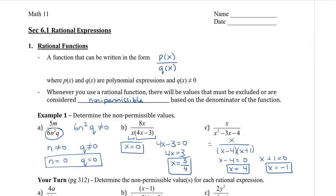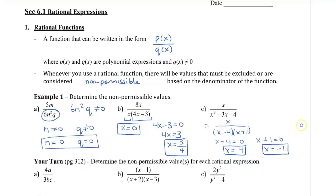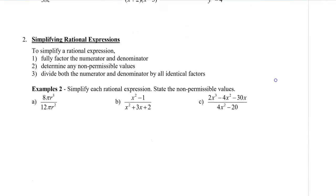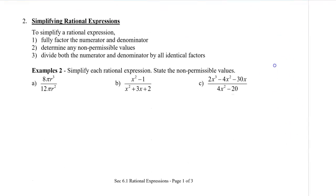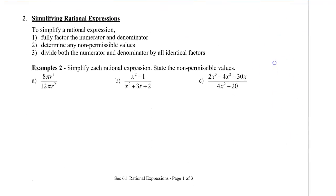Now we're going to look at how to simplify rational expressions. To simplify a rational expression, we first need to factor the numerator and the denominator, determine any non-permissible values based on the denominator, and then divide the numerator and denominator by all identical factors to simplify.